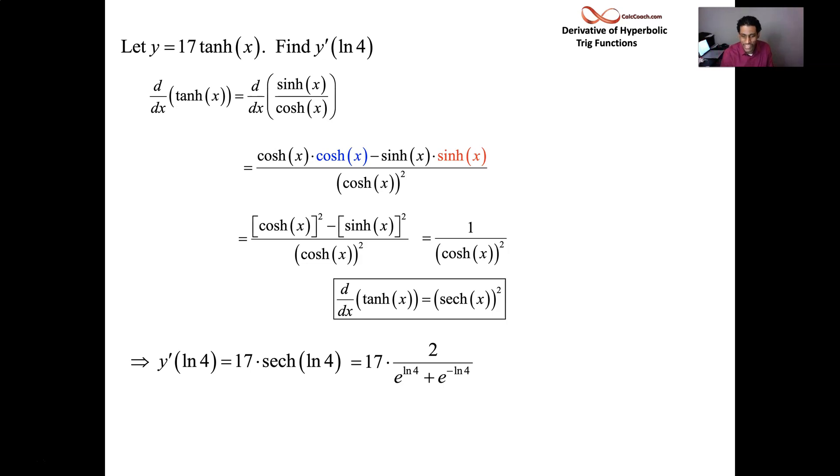So e to log 4, that's a 4. Be careful with e to negative log 4, though. You've got to take that negative 1 and put it up as an exponent, and then you can cancel. So we'll have 4 to the negative 1, which is a fourth.